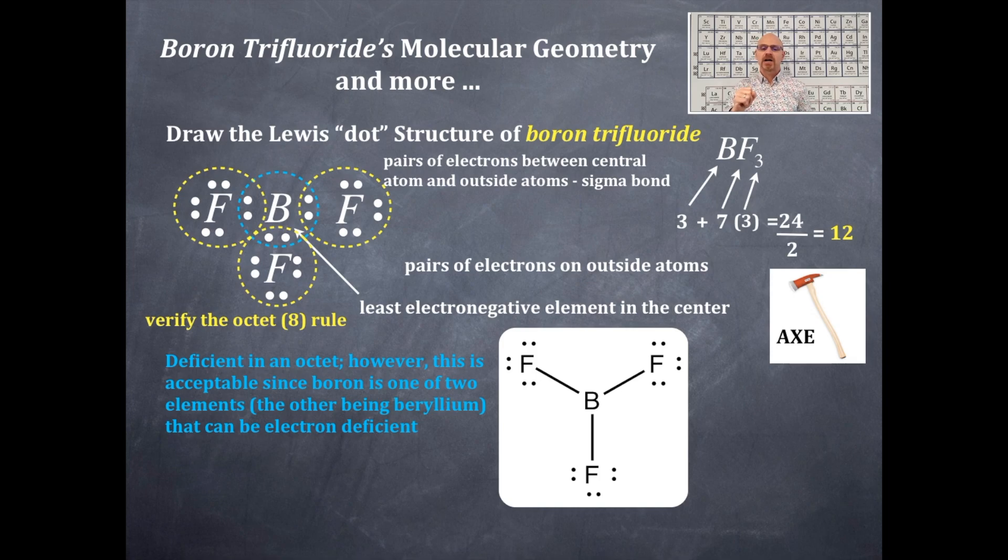And so how many fluorines do you see? Three. So that means it's an AX3 thus far. Are there any lone pairs on the central element, the boron? No there are not, so therefore you cannot put any E's on this, so it's gonna be AX3.